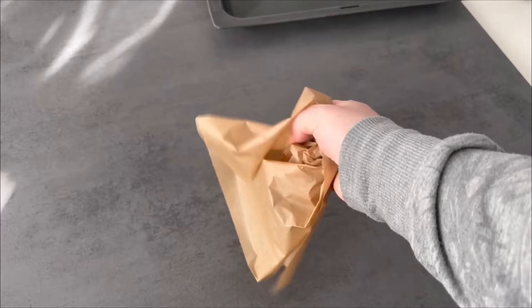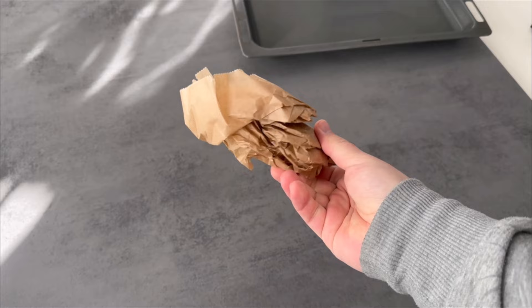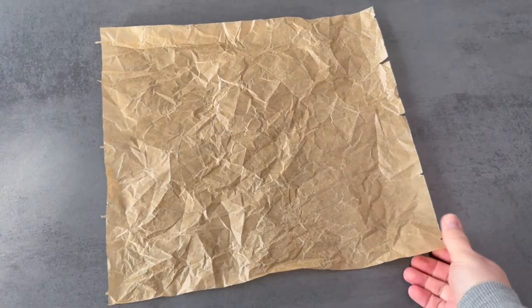And that's exactly why you should crumble up the piece of baking paper completely before you use it. Just crumble it up in your hand like you can see here. Now you take it again and open it up. As you can see, it's really smooth, and now you can just put it on your baking tray without it rolling up again.